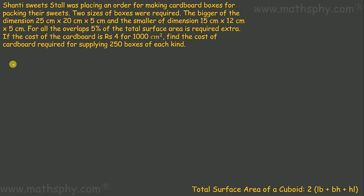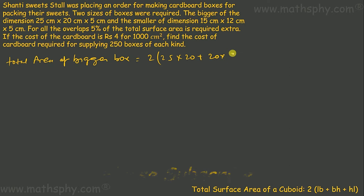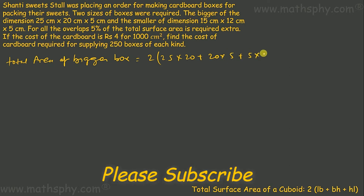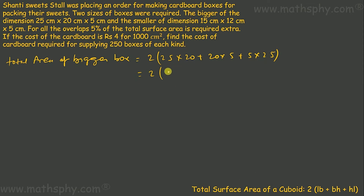The total area of the bigger box would be 2 × (25×20 + 20×5 + 5×25). This gives: 25×20 = 500, 20×5 = 100, 5×25 = 125. So this will be 2 × (500 + 100 + 125) = 2 × 725 = 1450 cm².